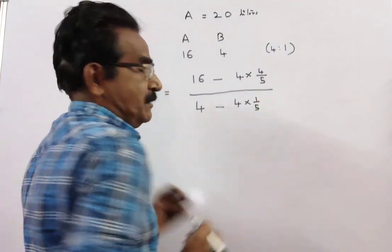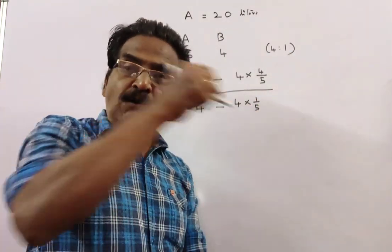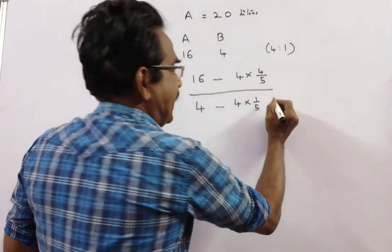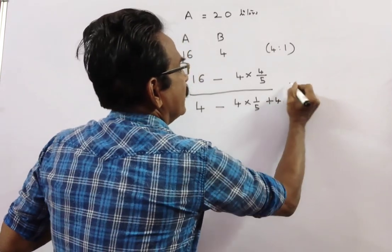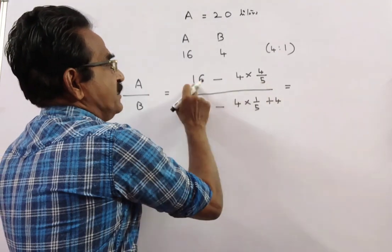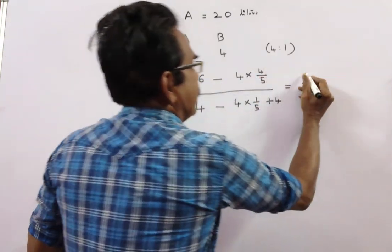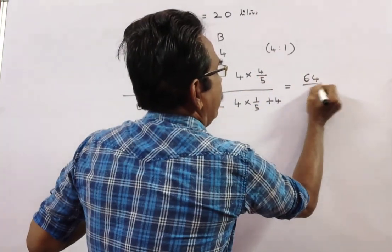4 into 1 by 5, this much is drawn. And now 4 liters of liquid B is added, plus 4. So this is equal to 5 sixteenths, 80 minus 16, 64 by 5.